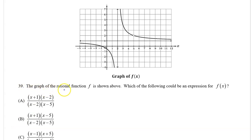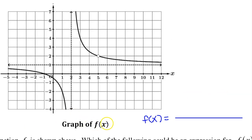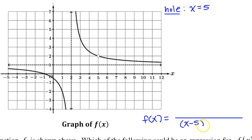Number 39. The graph of the rational function f is shown above. Which of the following could be an expression for f of x? Let's build our own expression for f of x and then compare that to the answer choices. I see that we have a hole at x equals 5. That tells us that we have a factor of x minus 5 in the denominator that cancels out with another factor in the numerator. We may need the fact that the y-value of the hole is 2 later, so let's record that as well.